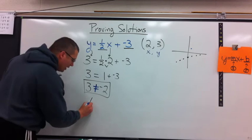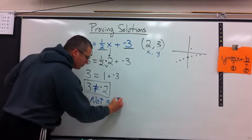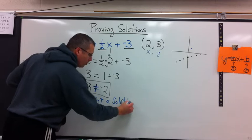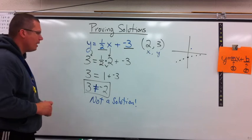So I'll put a line through my equal sign. No. This is not a solution. So 2, 3 is not an ordered pair that fits on my line.